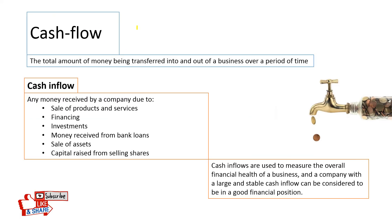So what is cash flow? Cash flow is the total amount of money being transferred into and out of a business over a period of time. We have cash inflows and we have cash outflows.